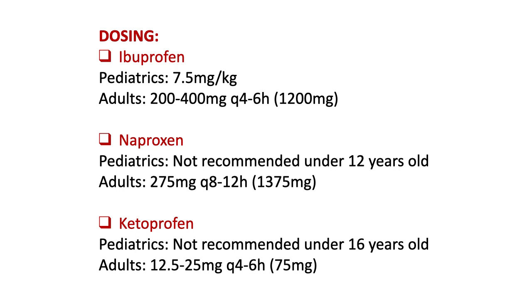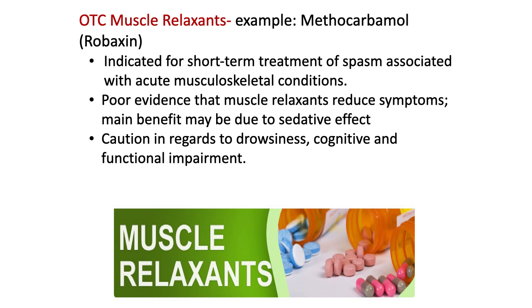For OTC muscle relaxants, an example is methocarbamol, though it may not be widely available in local markets. It can be used for short-term treatment of spasms associated with acute musculoskeletal conditions. However, there is poor evidence that muscle relaxants reduce symptoms — the main benefit may be due to a sedative effect. Caution is needed regarding drowsiness and cognitive and functional impairment. Using NSAIDs is usually sufficient, and if they don't work, the patient likely needs stronger prescription analgesics.